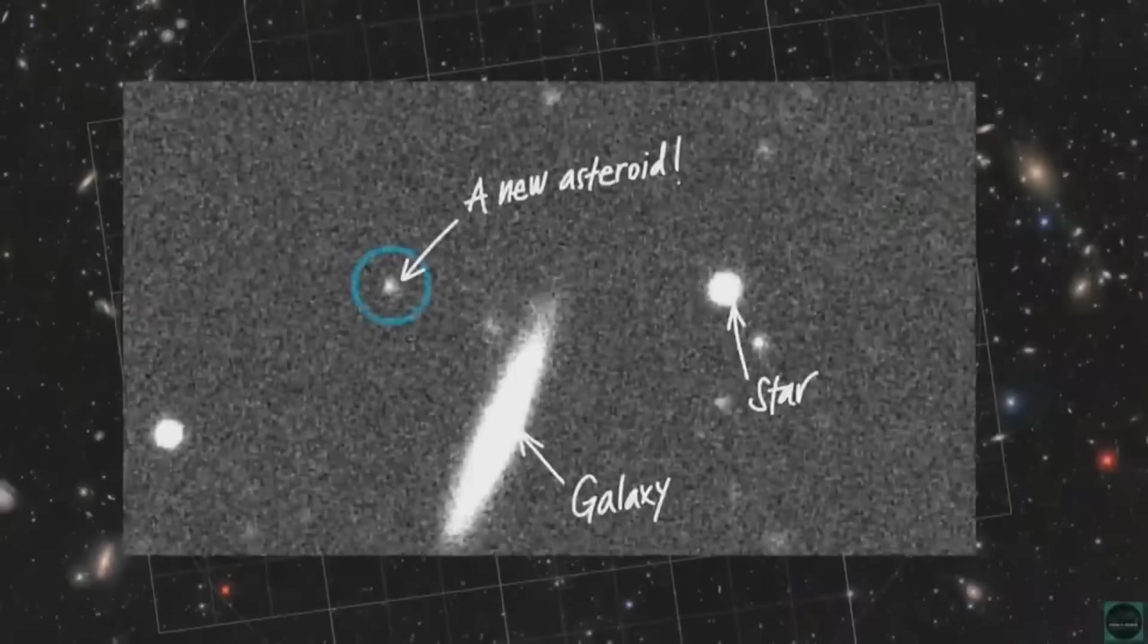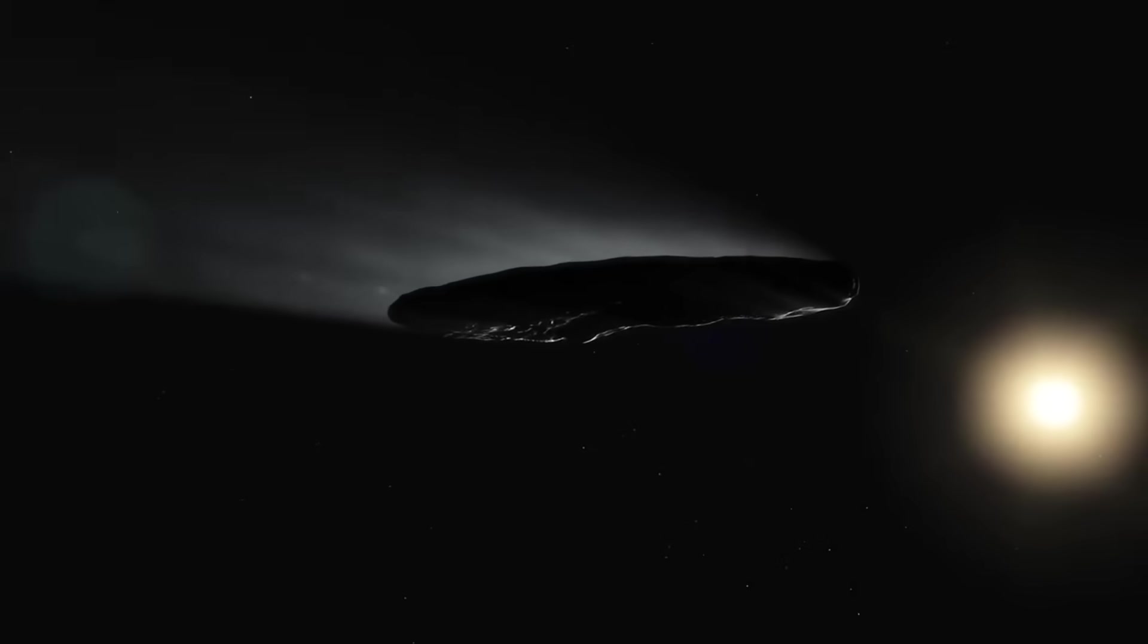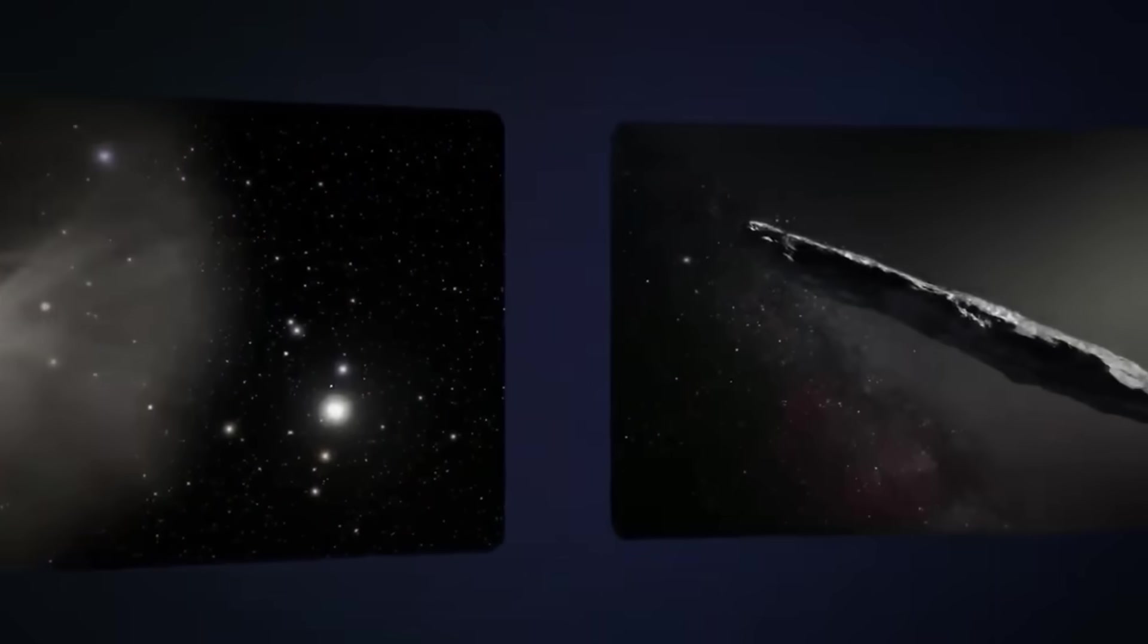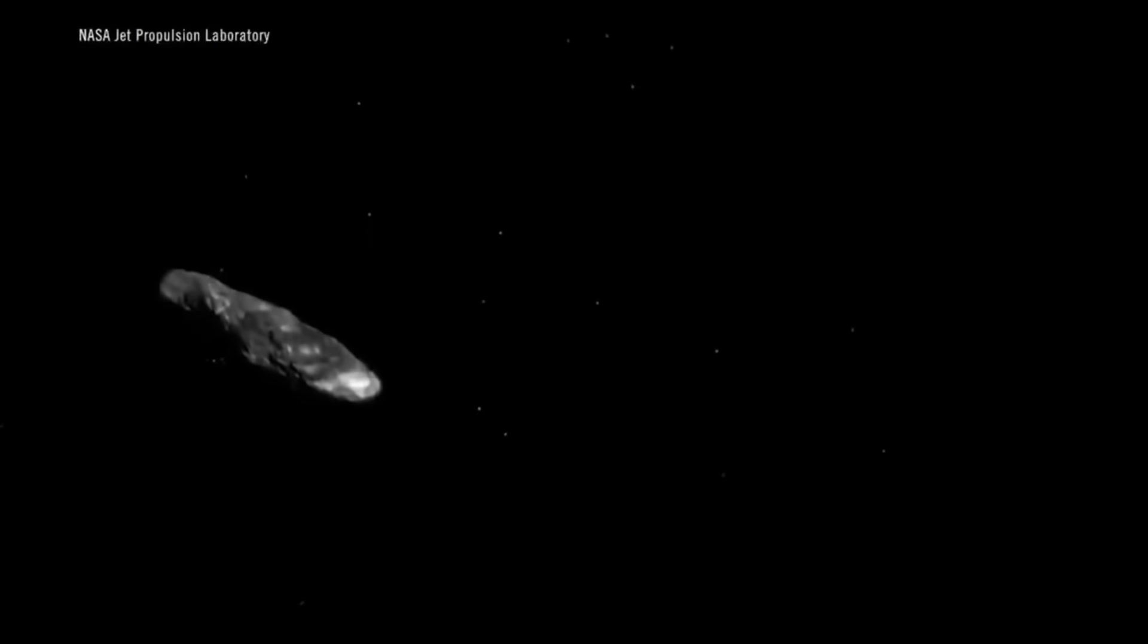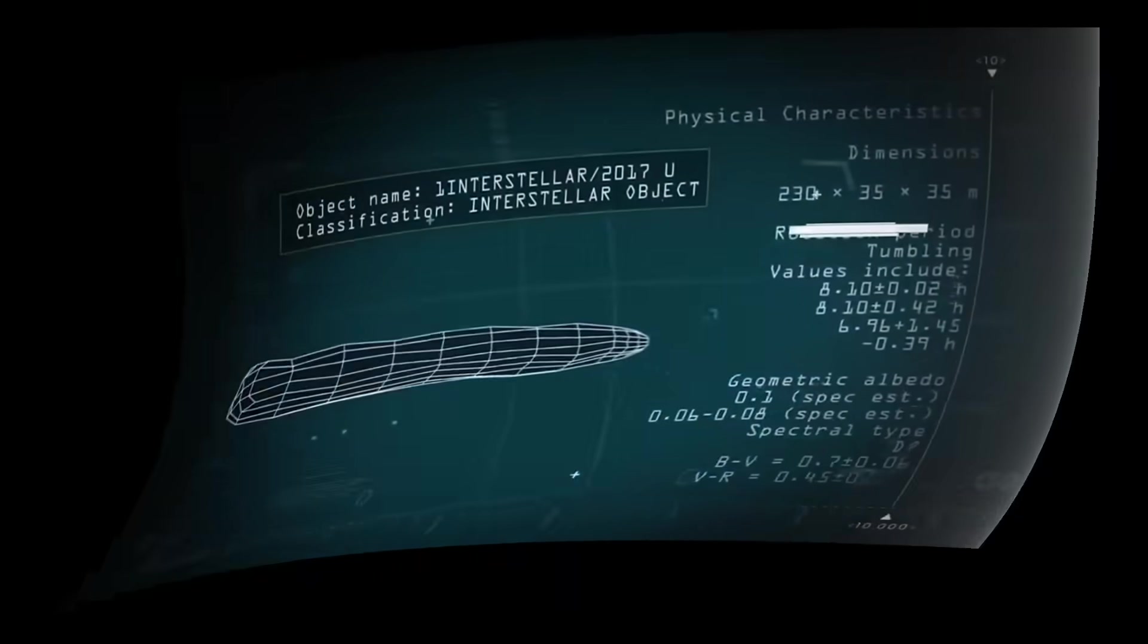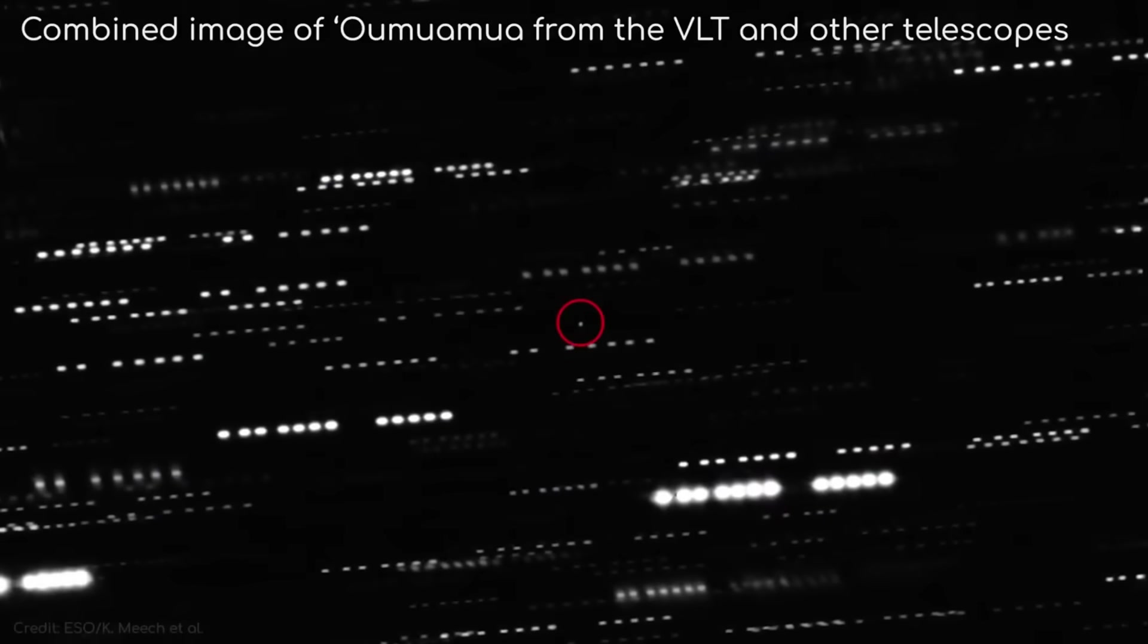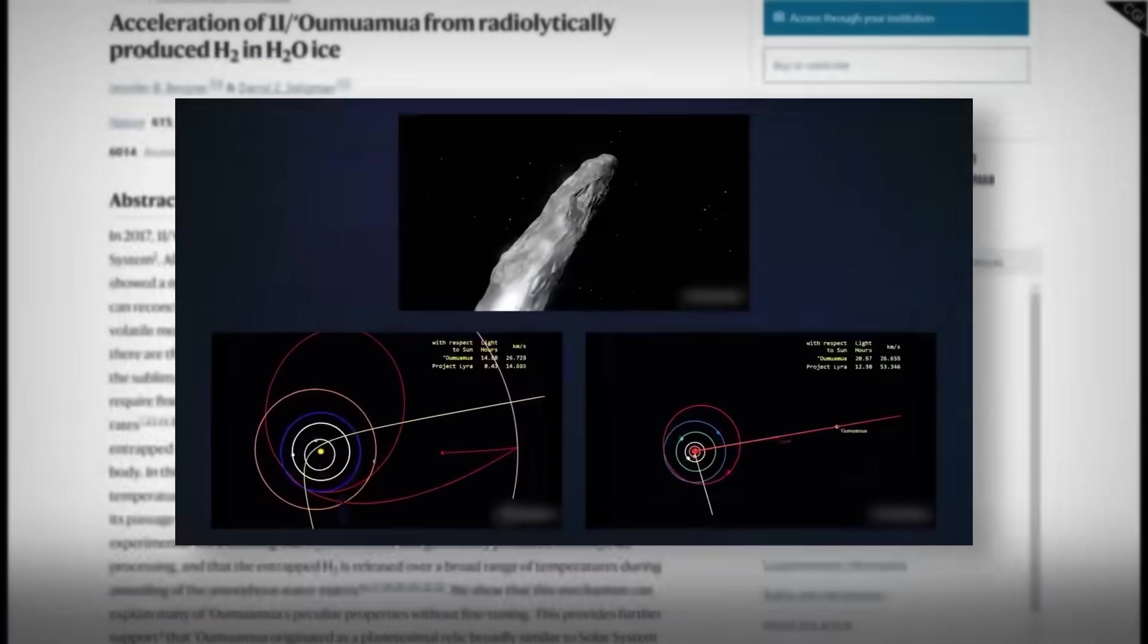The scientific community has divided into two distinct camps over what these interstellar visitors, particularly Oumuamua, actually represent. The first camp argues for natural explanations. In March 2023, researchers Jennifer Bergner and Daryl Seligman published a groundbreaking paper in Nature, proposing that cosmic rays bombarding an ice-rich body could produce trapped molecular hydrogen. When Oumuamua neared our sun, this hydrogen released as invisible gas, acting like tiny thrusters. It's exactly what should happen to interstellar comets, Seligman explained. We had all these crazy ideas, and it's just the most generic explanation. Others suggest exotic ices, perhaps nitrogen fragments from a Pluto-like exoplanet, or debris from tidally disrupted comets in distant star systems.